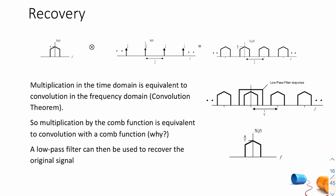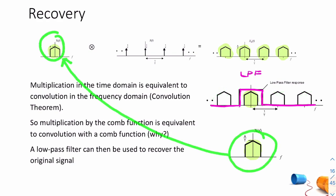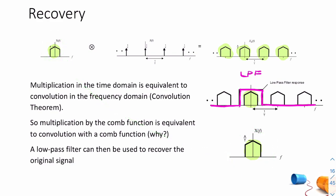To recover the original message from the oversampled signal, we apply a low-pass filter — in this case an ideal low-pass filter that allows the baseband portion of the spectrum to pass and blocks all higher frequency components, so you recover your original message.